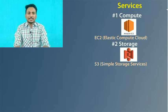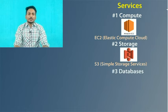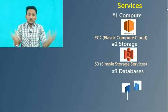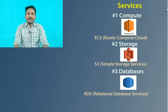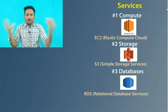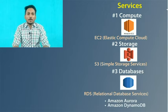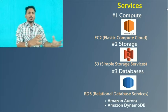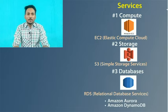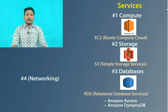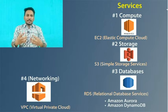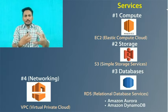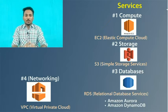And the second service, S3 - Amazon Simple Storage Services. You can move towards S3. And your third service, Amazon Relational Database - Oracle, MySQL, SQL Server, MongoDB. You can move towards it. And your fourth service, Amazon Virtual Private Cloud - it's mainly towards networking. You can have Amazon Aurora and you can move towards Amazon DynamoDB.